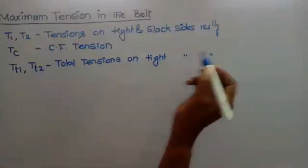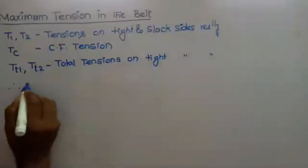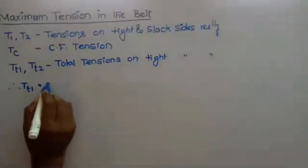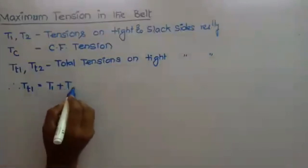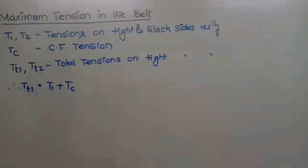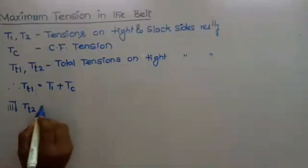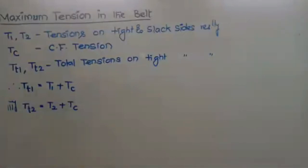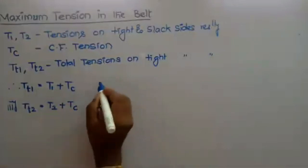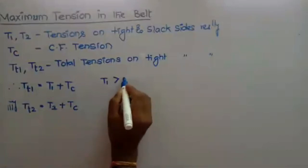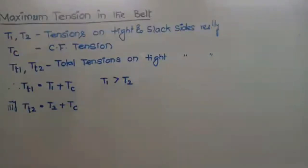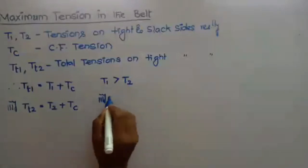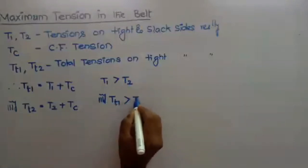Total tensions on tight and slack sides respectively. Therefore: TT1 = T1 + Tc, and TT2 = T2 + Tc. Out of these two, which one is greater? Since T1 is the tension on the tight side and is greater than the tension on the slack side, similarly the total tension on the tight side is greater than the total tension on the slack side.